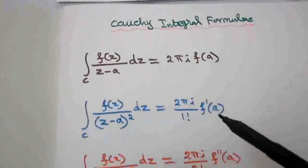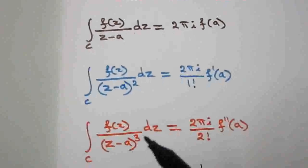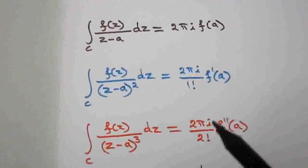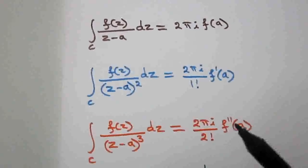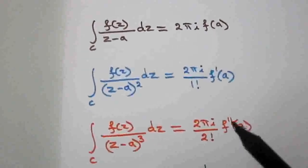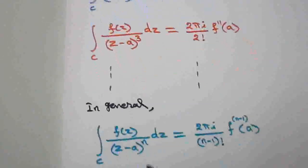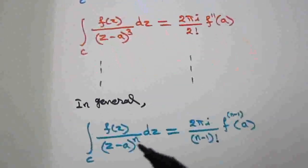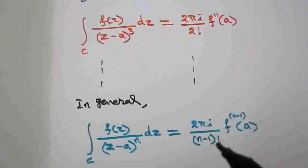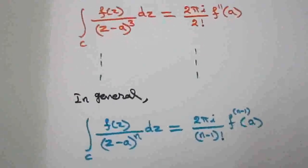The third form: integral over C of f(z) / (z - a)³ dz = 2πi / 2! · f''(a). So power 3 means 2nd derivative and 2! In general: integral over C of f(z) / (z - a)ⁿ dz = 2πi / (n-1)! · f^(n-1)(a).